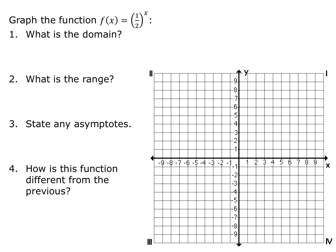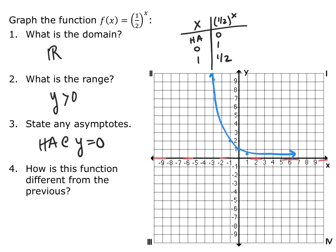Looking at the function y equals 1 half to the x — using the parent function with horizontal asymptote 0, the points (0, 1) and (1, base) — plugging in a couple more points: if I plug in negative 1, I get 2; negative 2 gives 4; and negative 3 gives 8. I filled in the graph from those points.